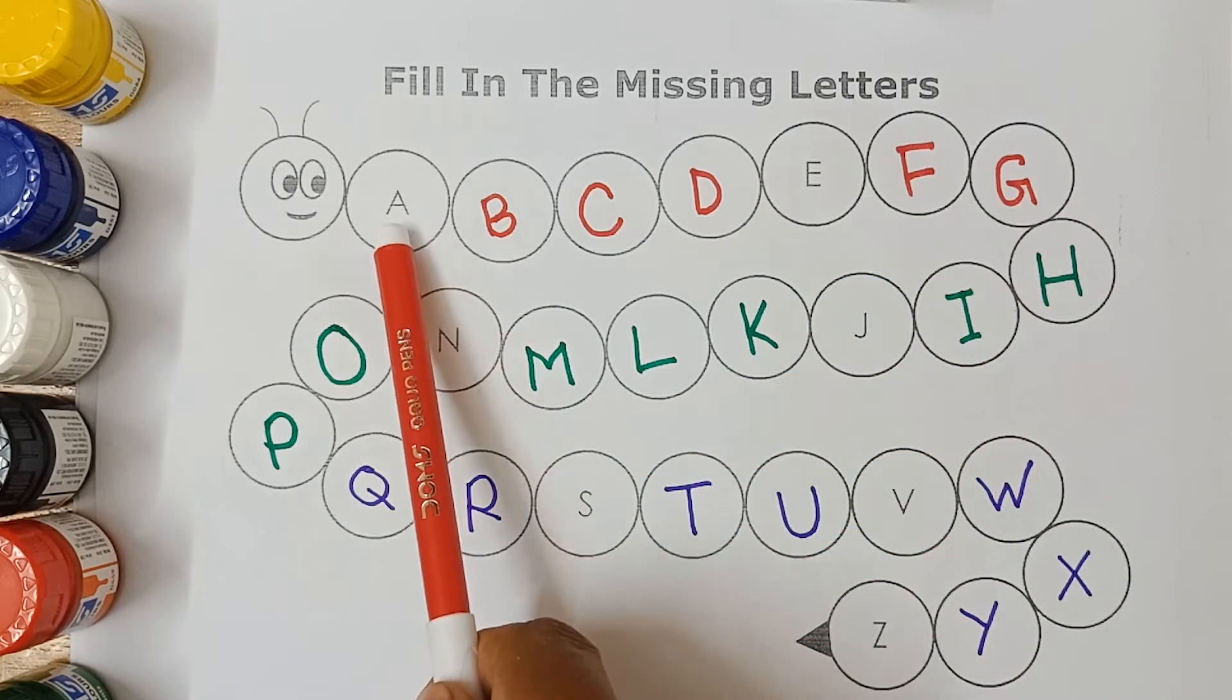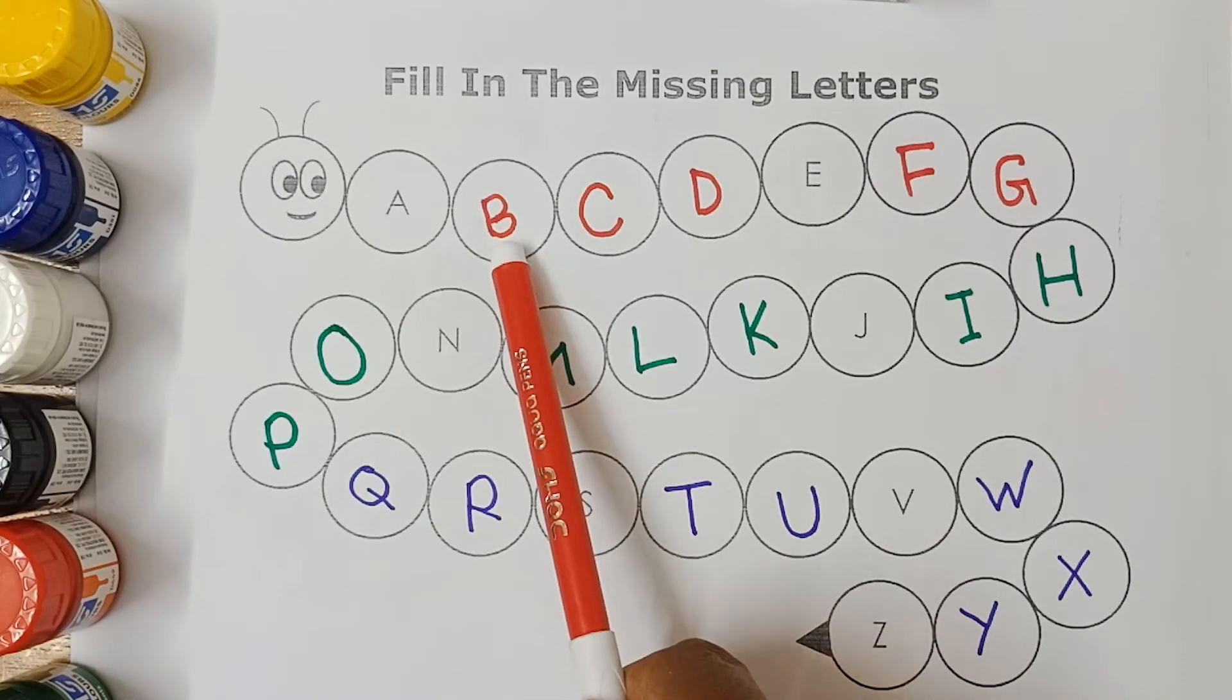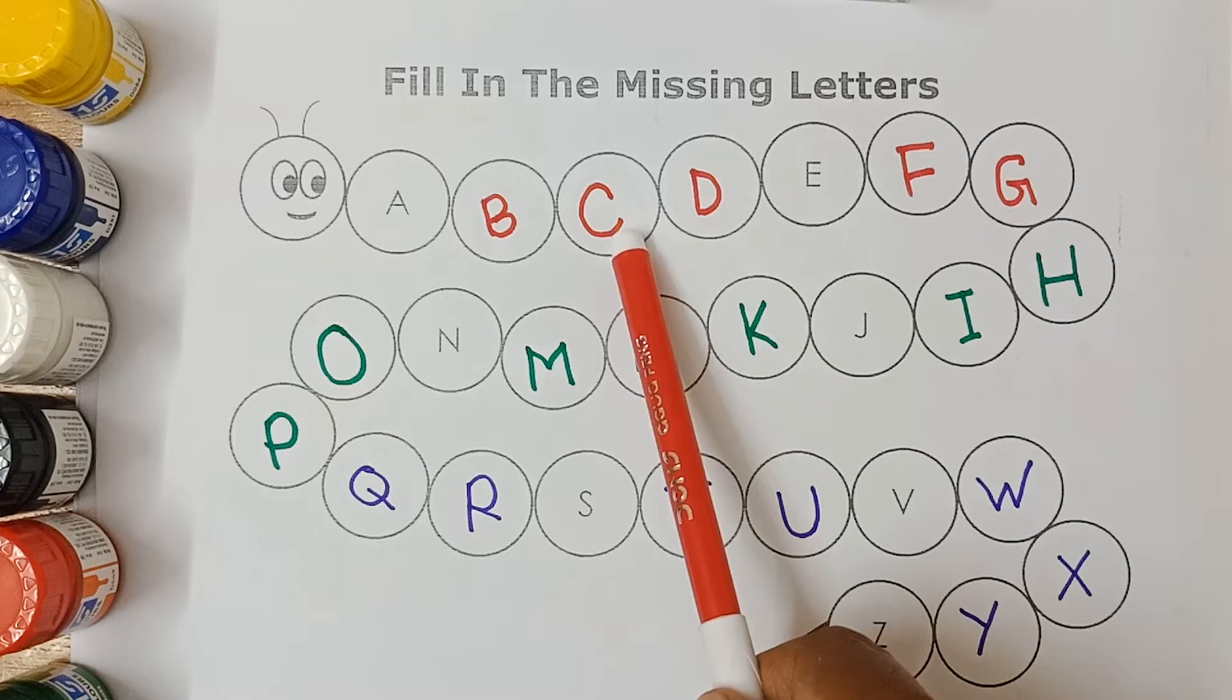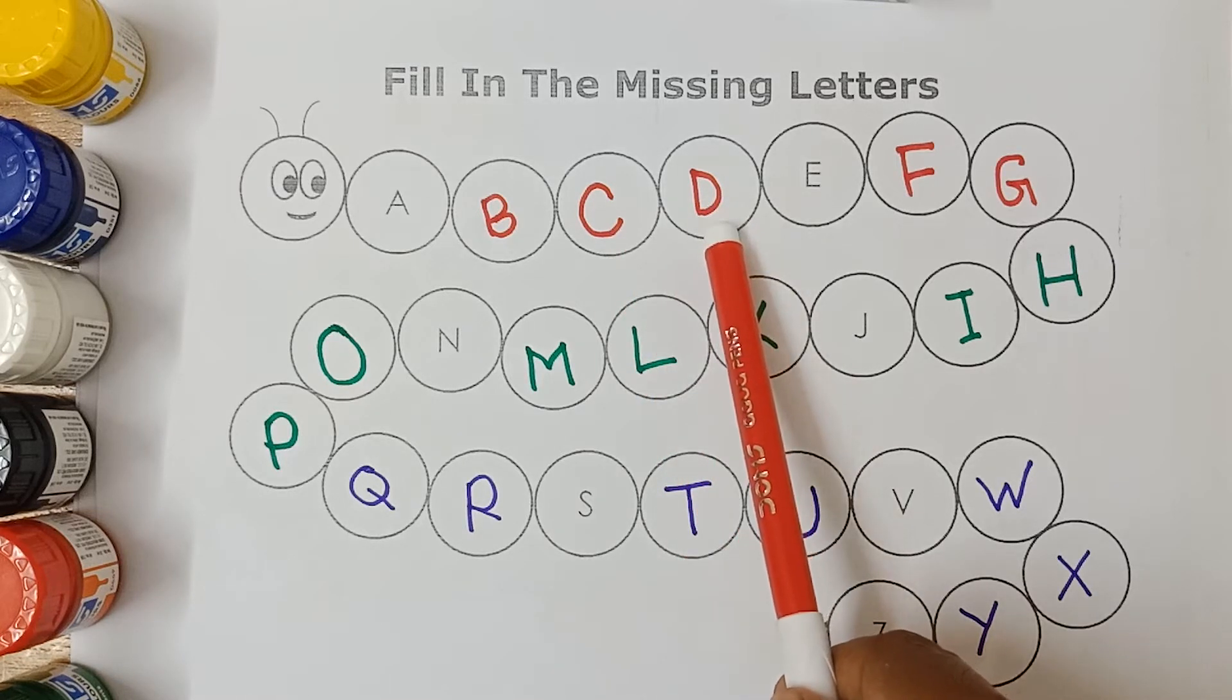A, A for ant. B, B for ball. C, C for cat. D, D for dog. E, E for egg.